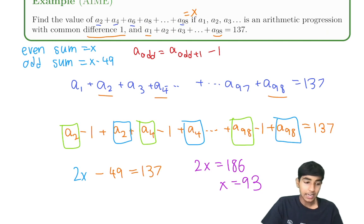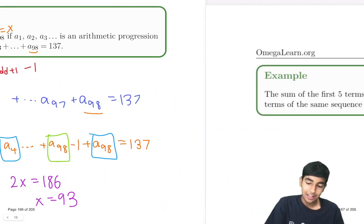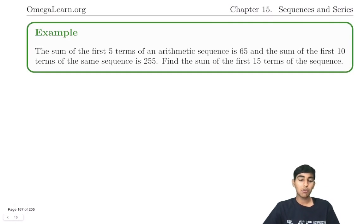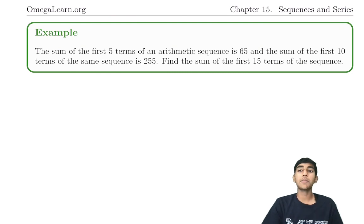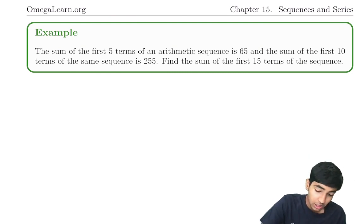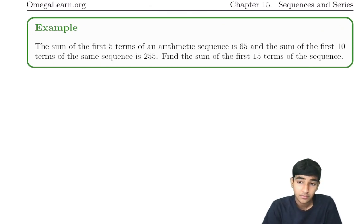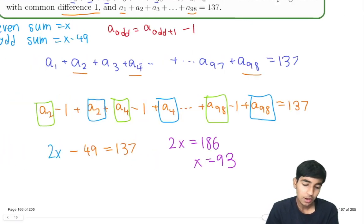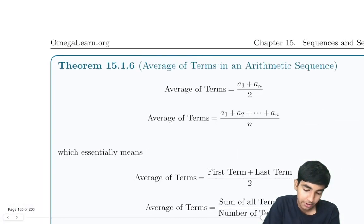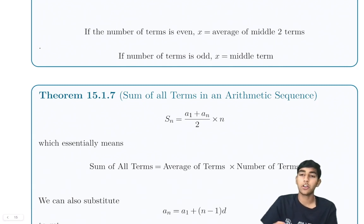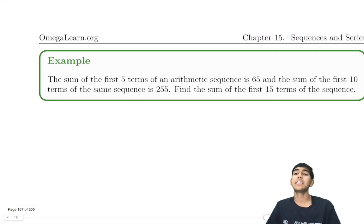Let's solve another arithmetic sequence problem. The sum of the first 5 terms of an arithmetic sequence is 65. The sum of the first 10 terms is 255. Find the sum of the first 15 terms. We have a bunch of sums, so we'll want to use the sum of all terms formula. We don't know the specific sequence, just that it's arithmetic.